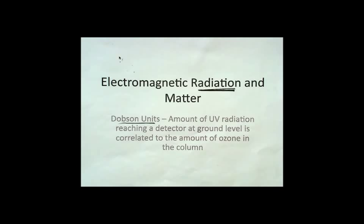But we know that there must be something about the interaction of ultraviolet light or radiation and ozone because of the Dobson unit that we talked about last time. And the Dobson unit, the amount of ultraviolet radiation that's reaching a detector at ground level is correlated to the amount of ozone in the column.